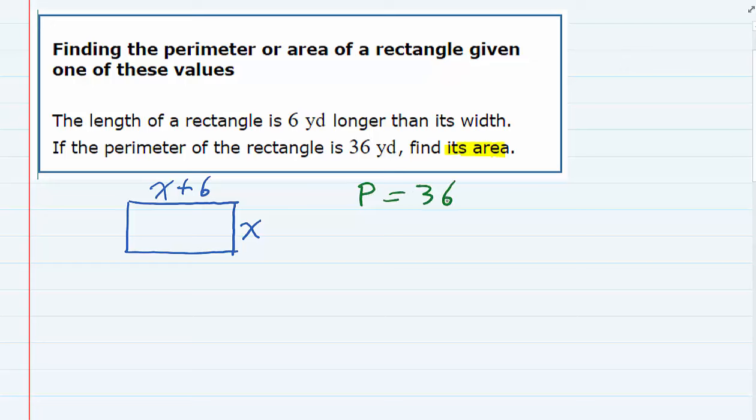The way we get the perimeter is we add up all of the lengths surrounding the rectangle. So I'm going to add the first one, x plus 6, plus the next one, which is x.